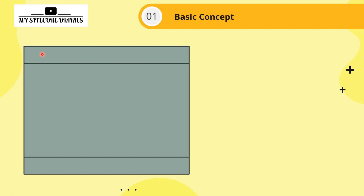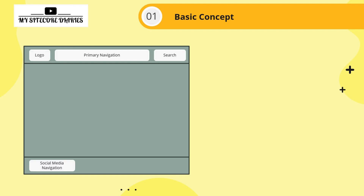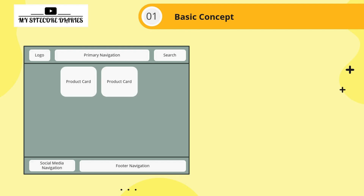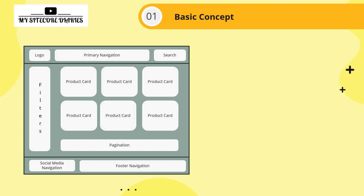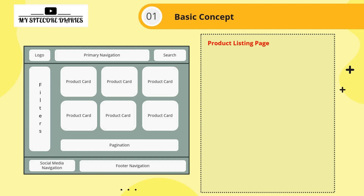The top part is the header section, where you display logo, primary navigation, and search. The footer section has social media navigation and footer navigation. The middle part — the main body — displays a product list with product cards, pagination, and filters on the left-hand side. This is the structure for a product listing page.